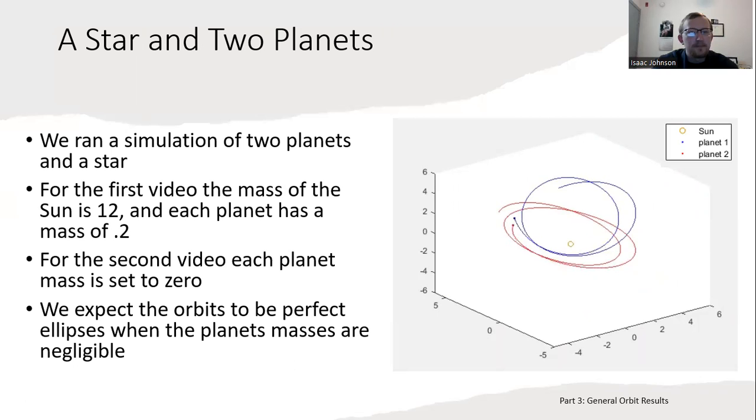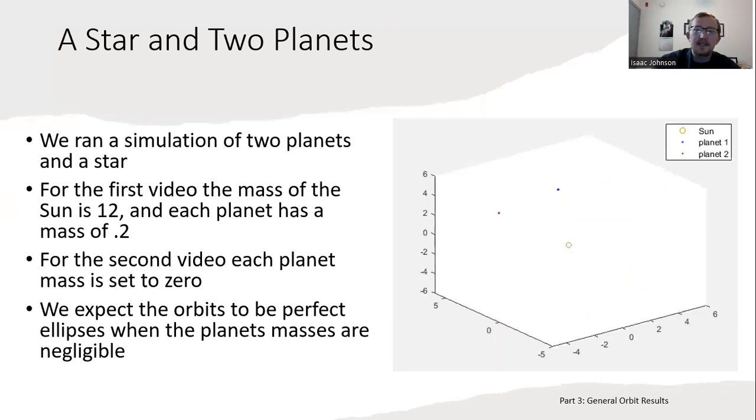For the second video, I set each planet's mass to 0. This was to test the code, make sure it's giving out reasonable results. Of course, if the planets have no gravitational effect on each other, then we would expect them to go back to elliptical orbits, closed elliptical orbits. And we see that is the case. The elliptical orbits are in a different plane—the elliptical orbit of the blue planet is in the plane defined by the blue planet and the star. So seemingly reasonable results.